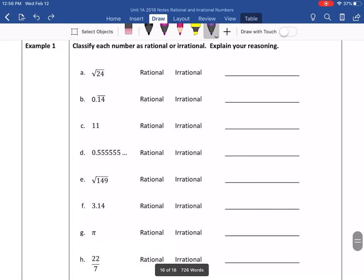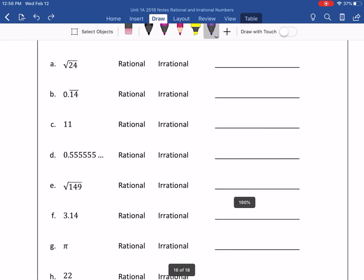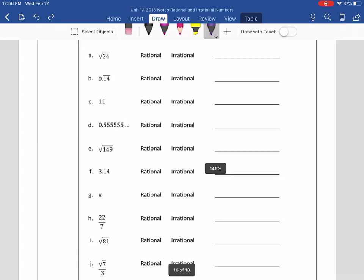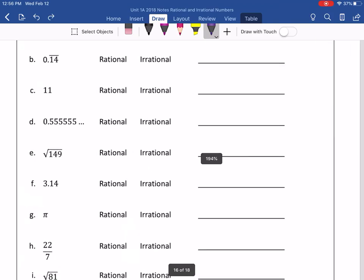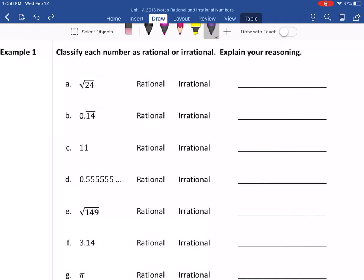It says classify each number as rational or irrational. We've gone over rational, over and over, and what it means. We gave examples of rational numbers being any number that can be turned into a fraction.